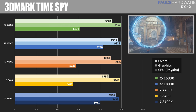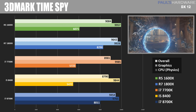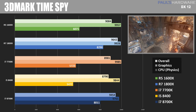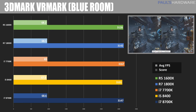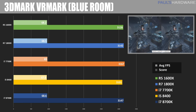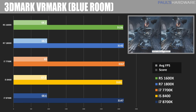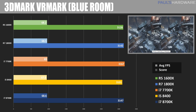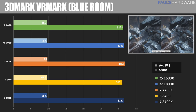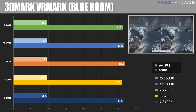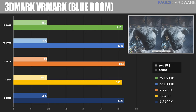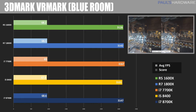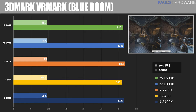When you look at the graphics scores in Time Spy they are very similar, indicating the CPU doesn't really have much effect on the GPU's performance, but the CPU test does give the 1800X the lead. I also introduced some VR testing with 3DMark VRMark BlueRoom, which is a very difficult test targeting 90 FPS. There wasn't much variance between the different CPUs and platforms, leading me to believe this test isn't using more than about 6 threads at a time and is much more GPU-bound than CPU-bound.